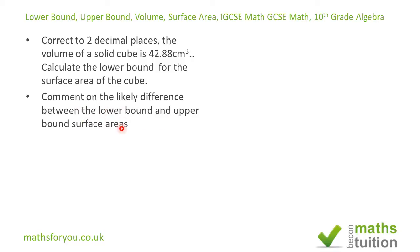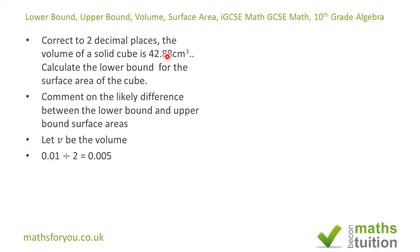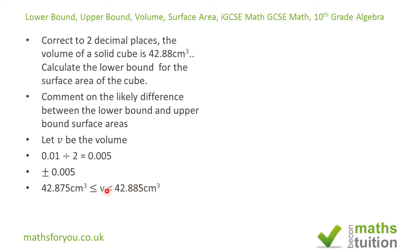The second part says: comment on the likely difference between the lower bound and upper bound surface areas. Since the volume V is approximated to two decimal places, the actual figure must have been to three decimal places. Dividing 0.01 by two gives 0.005, so we subtract 0.005 from 42.88 for the lower bound, giving 42.875, and add 0.005 for the upper bound. Note the volume can equal 42.875 but must be strictly less than 42.885, so we use a less-than sign, not less-than-or-equal.